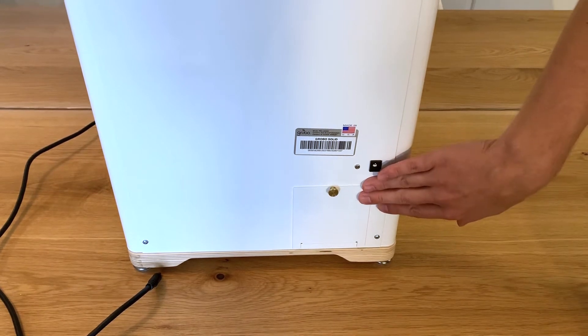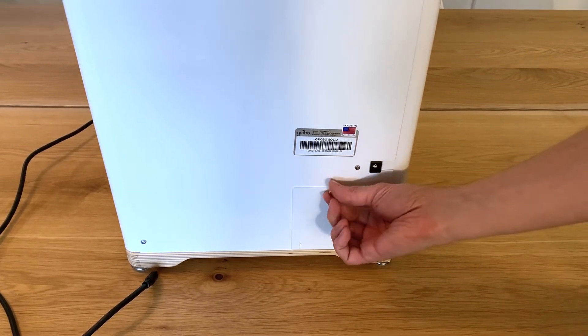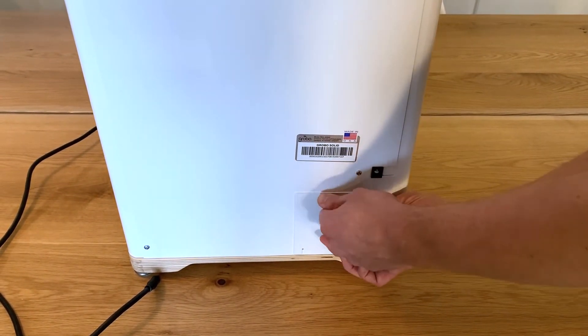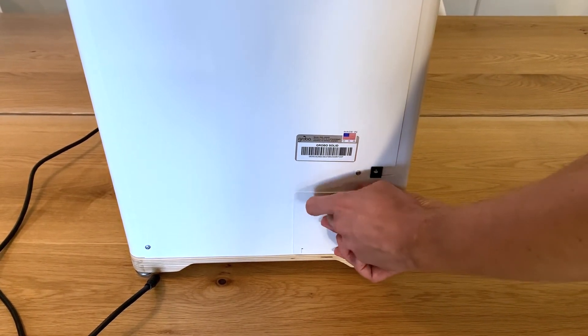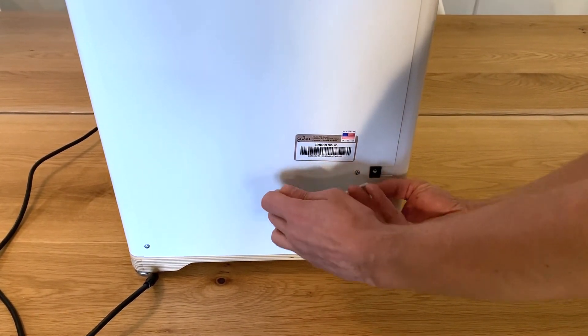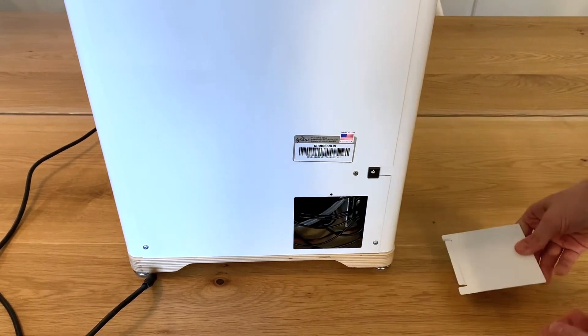Next, we're going to open up this access hatch here that's held on with one thumb screw. You can easily undo the thumb screw and you'll find that the hatch comes right open.